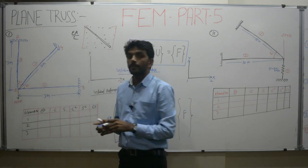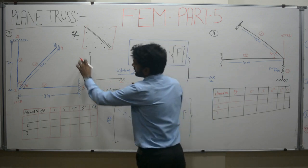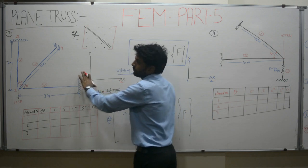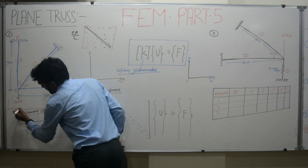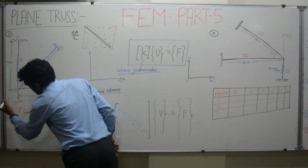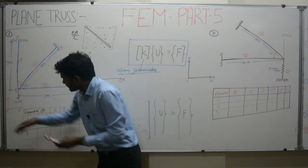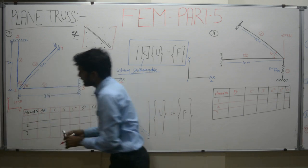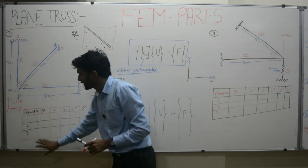To fill this table, we need to find the orientation of each and every element, since the truss members may be oriented horizontally, vertically, or at any particular angle. The approach is to establish a global reference frame for the problem — that is, a reference x and y axis — and then observe each element's orientation relative to that global reference.